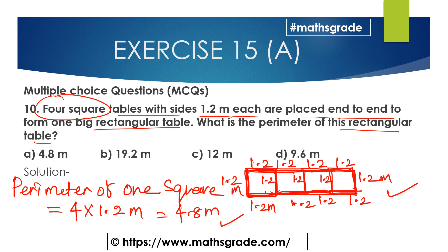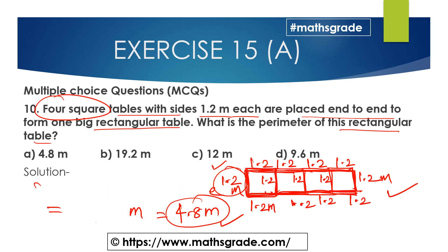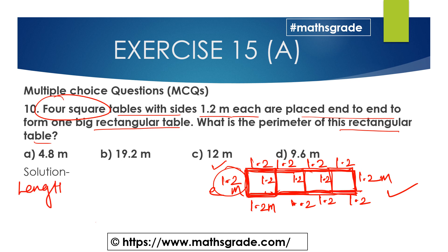Now we find the perimeter of the rectangular table. The length of the rectangular table is 1.2 + 1.2 + 1.2 + 1.2 = 4.8 meters. The breadth is 1.2 meters.